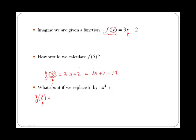If for doing f of 5, we went to every x in f and we replaced it by 5, now to do f of x squared, we are going to replace every x by x squared. Therefore, f of x squared is going to be 3 by x squared plus 2. We don't write a dot for the multiplication, we can just simply write 3x squared plus 2.